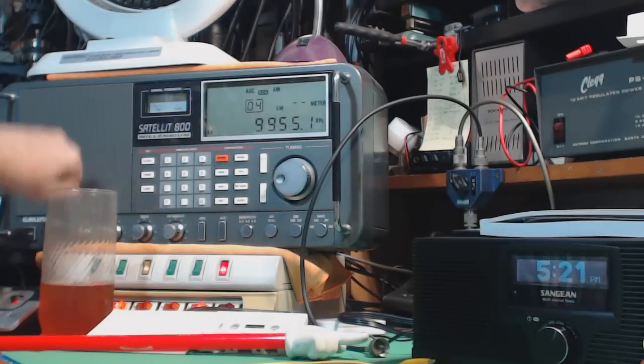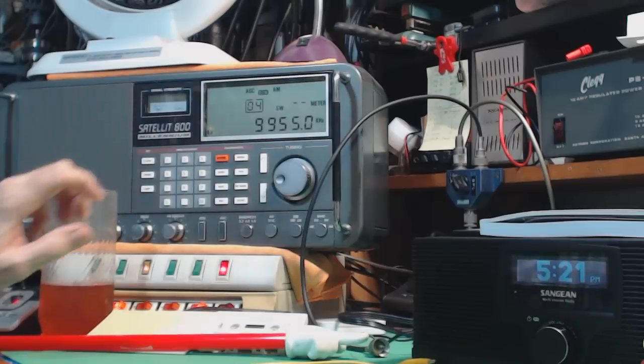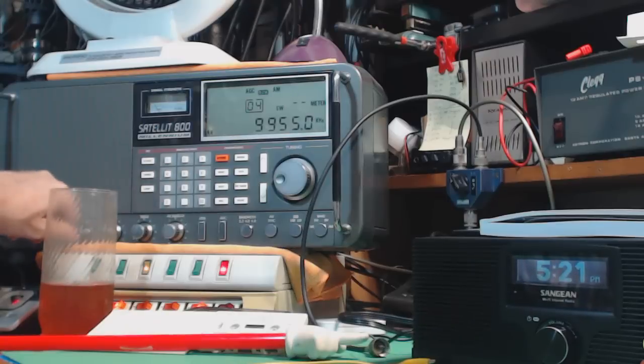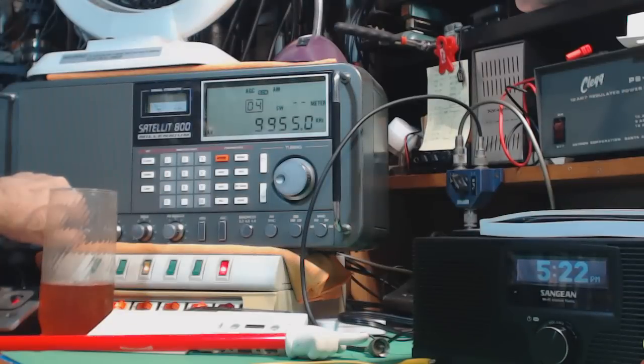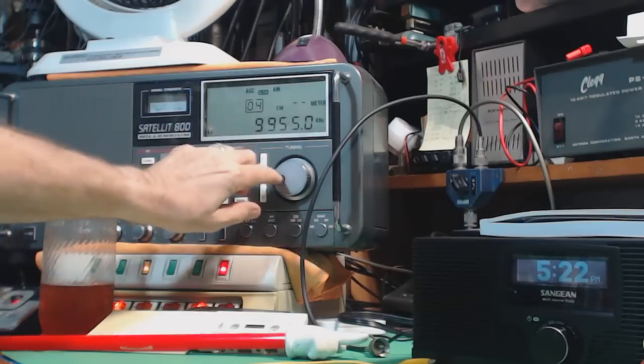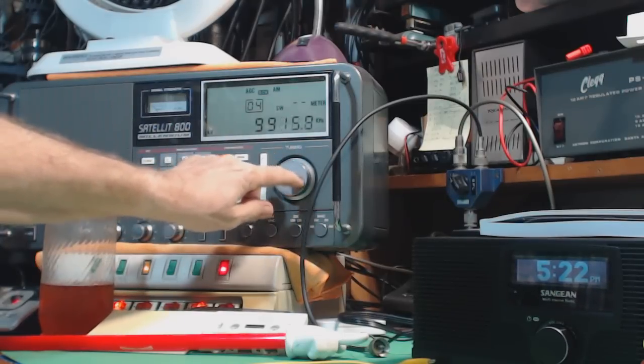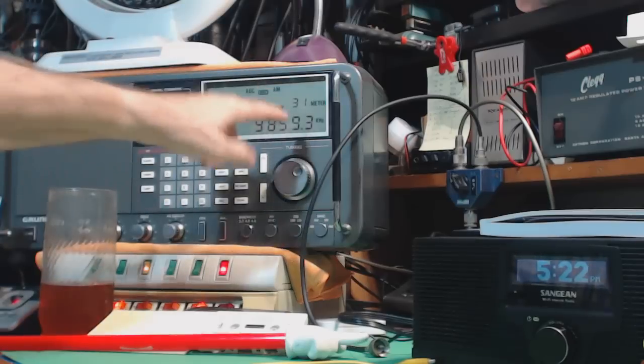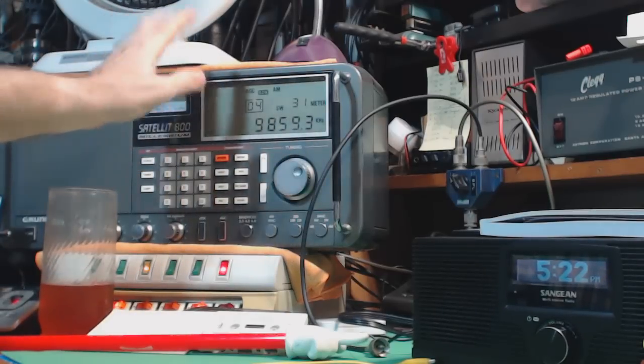He said the transmitter was 100 and some miles from New York City. I got 9.955. I don't know what that is, kind of weak, about 1.5. Well, we'll stay there. We're definitely now in the 31 meter band where before I'd gotten below 31 meters.